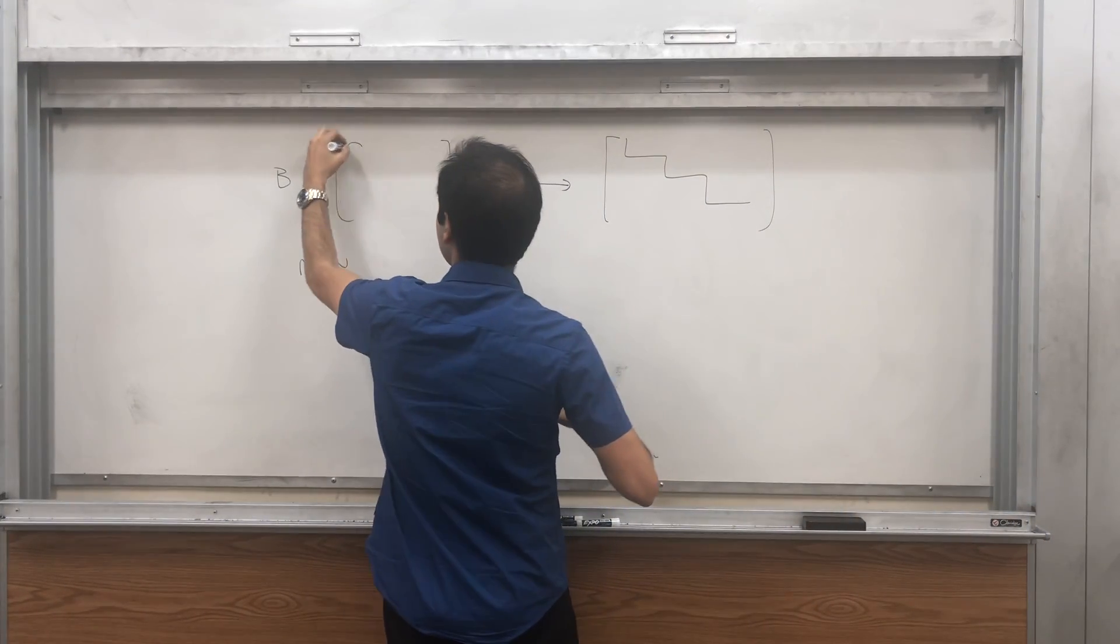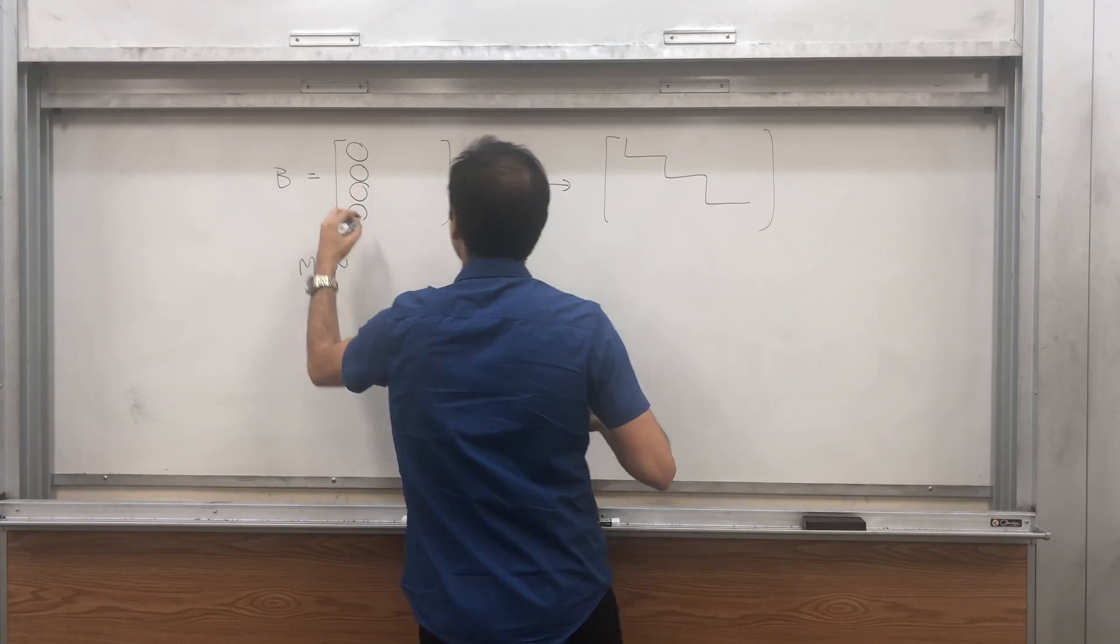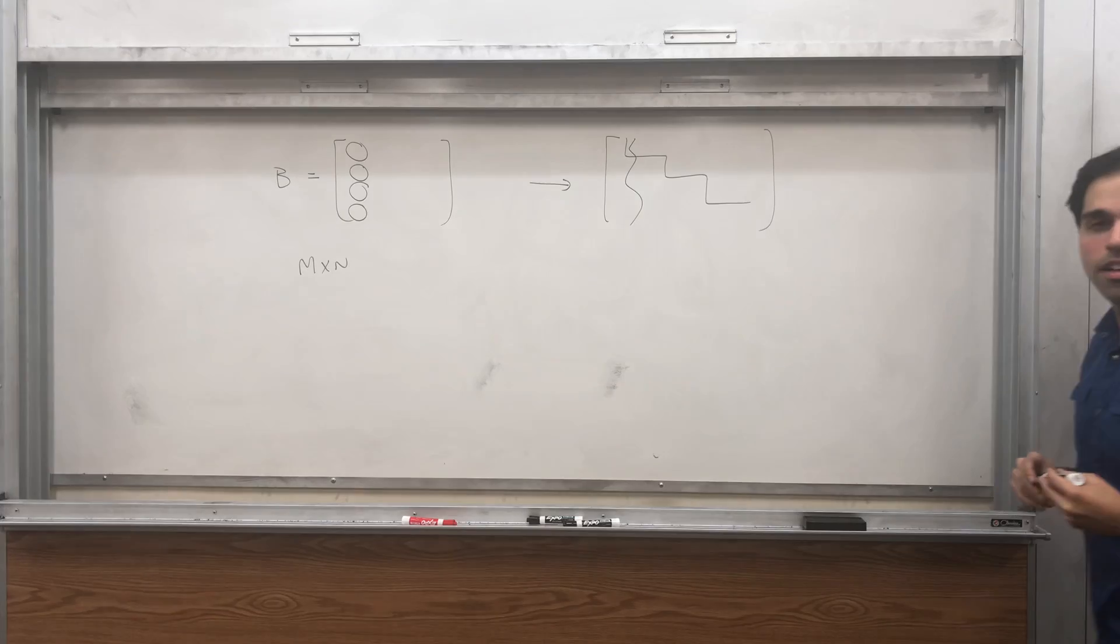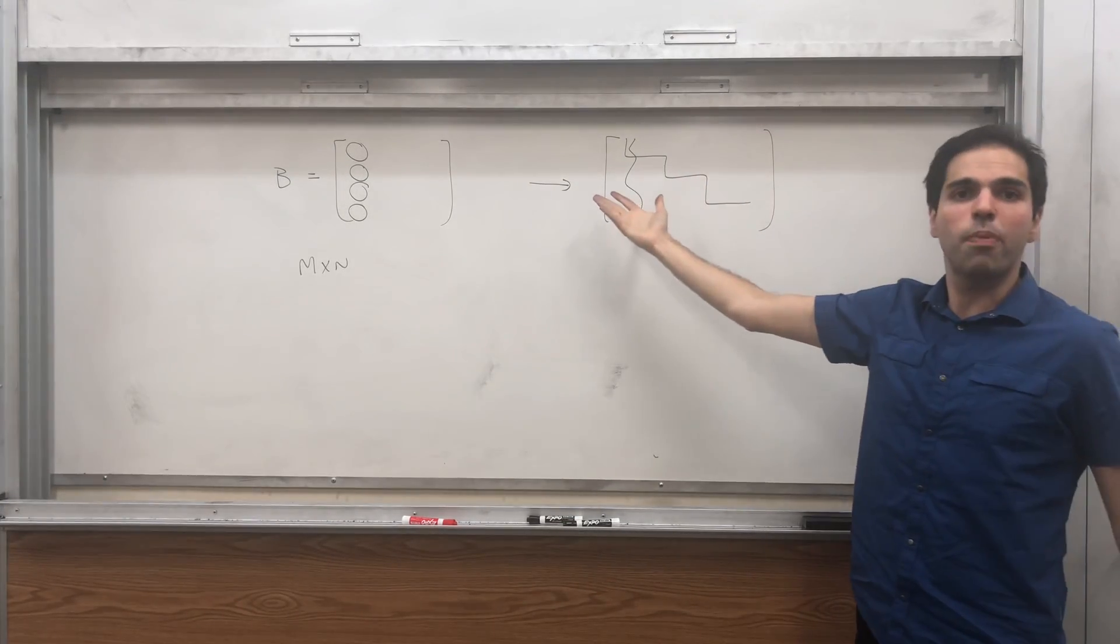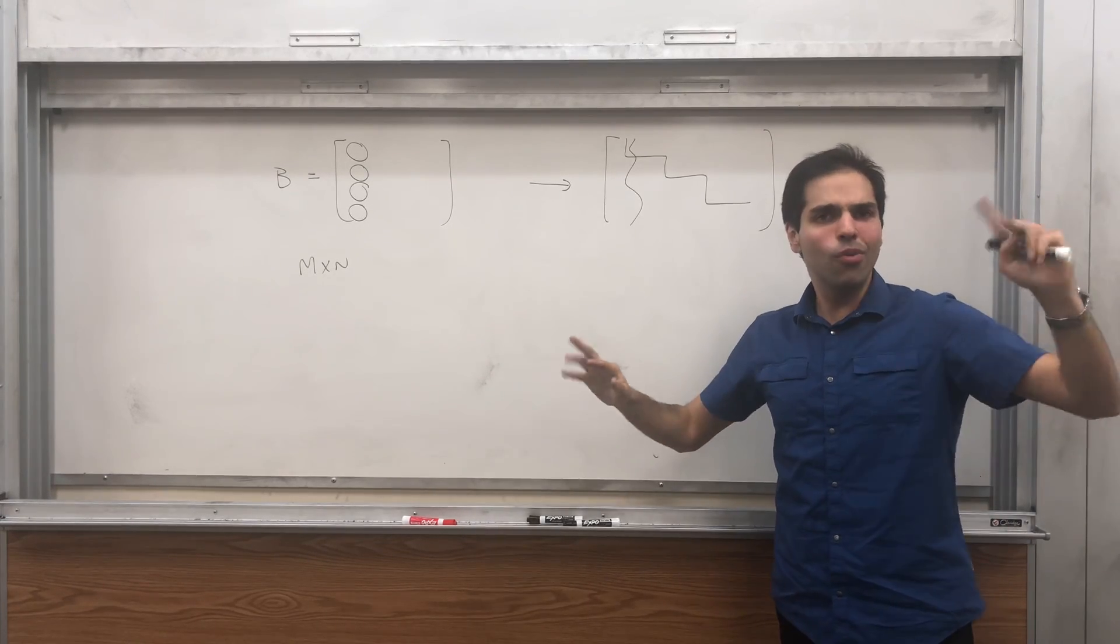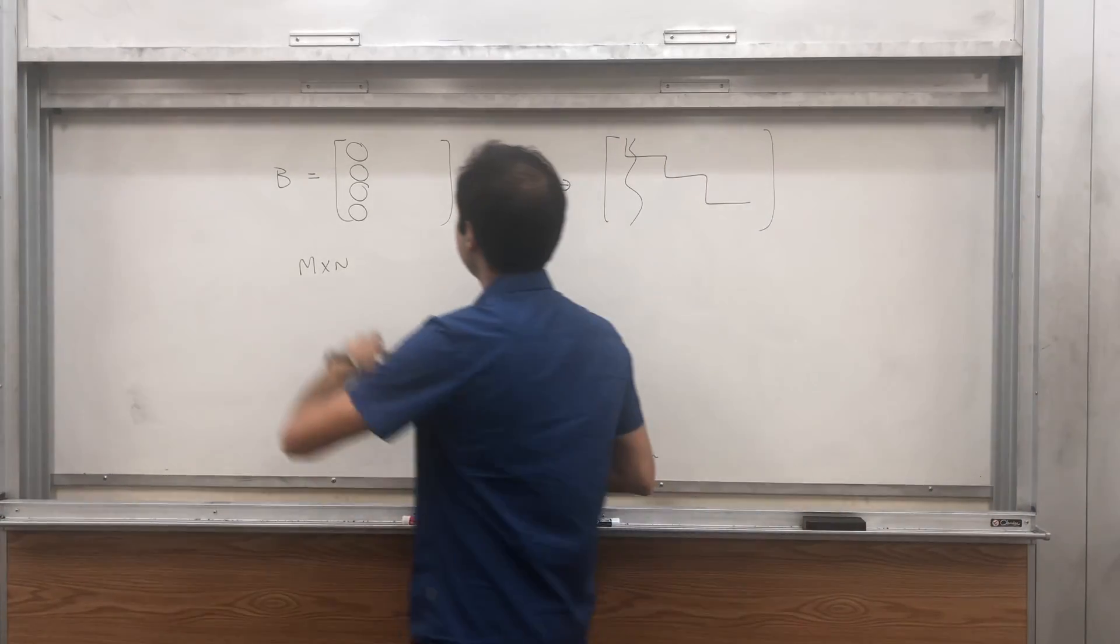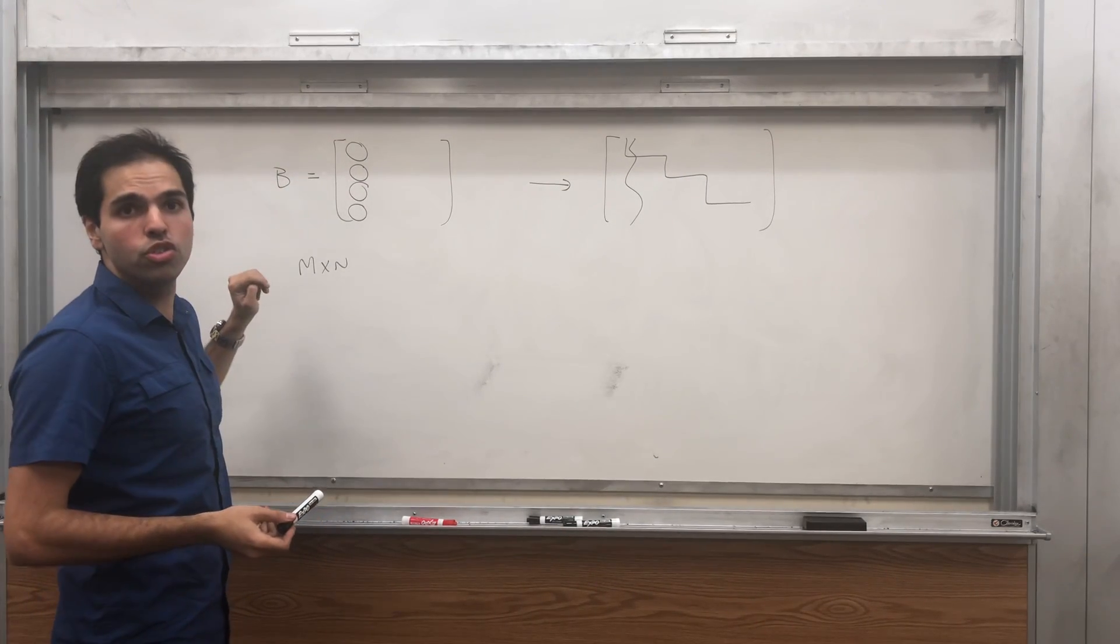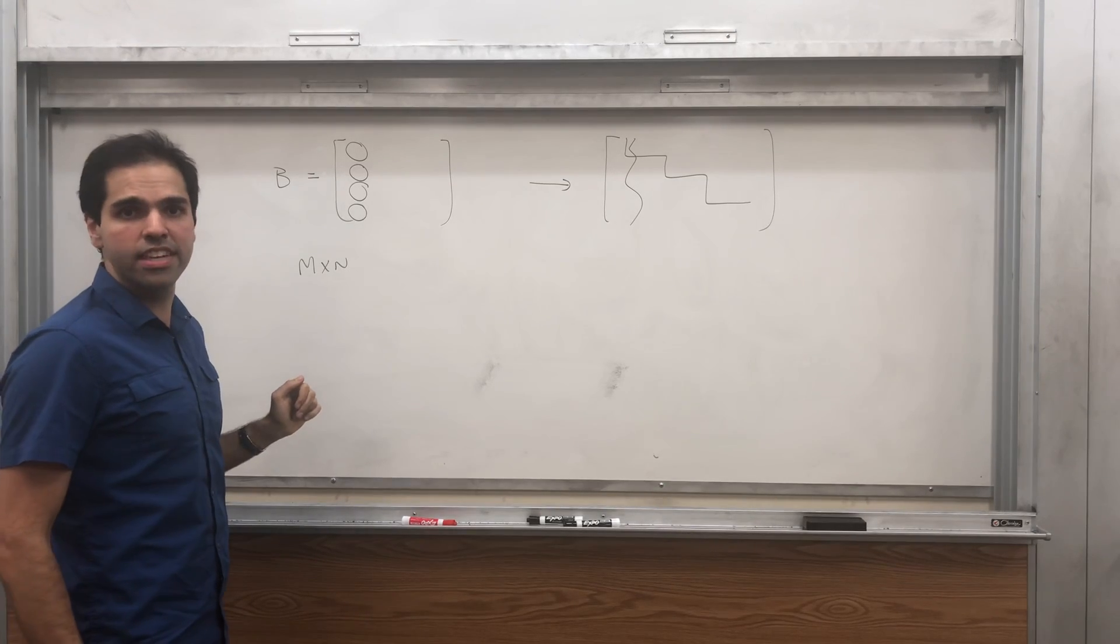So induction hypothesis says that if you row reduce this matrix, it becomes triangular, but it's possible that we take this column of zeros that we have here and turn them into non-zero columns. But that's actually not possible.